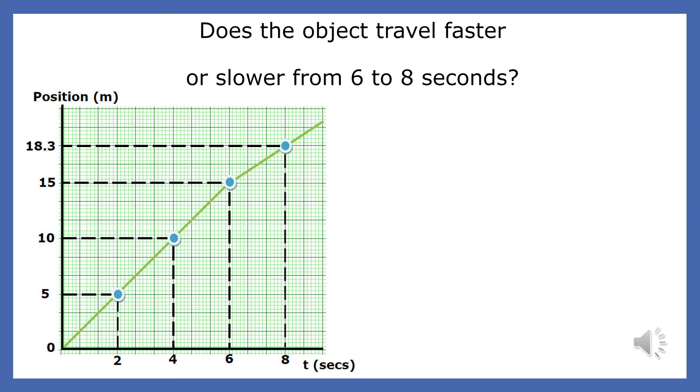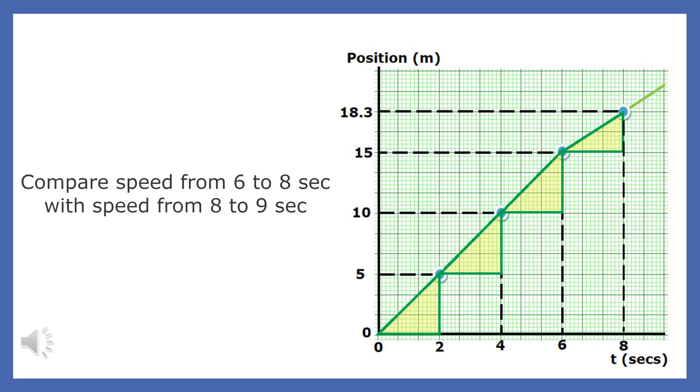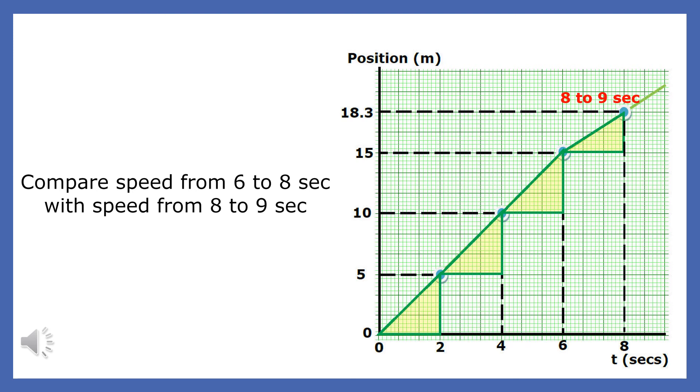Let's review. Does the object travel faster or slower from 6 to 8 seconds? The object obviously was slower between 6 and 8 seconds because the speed is the ratio of the change in position to the change in time. There is a smaller change in distance during that interval. Also, the slope is equal to the velocity and the slope decreases. Compare the speed from 6 to 8 seconds with the speed from 8 to 9 seconds. Since the slope from 6 to 8 seconds is the same as from 8 to 9 seconds, we know the speed is the same.